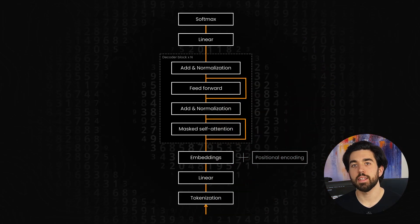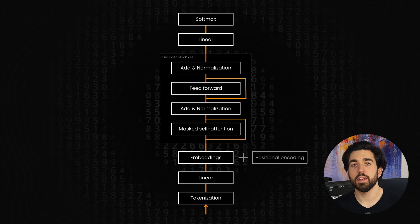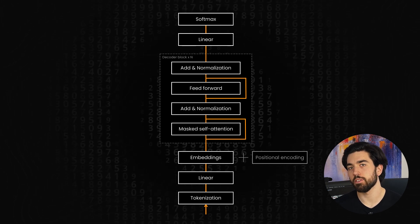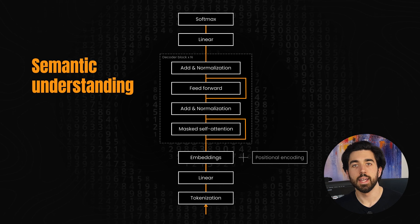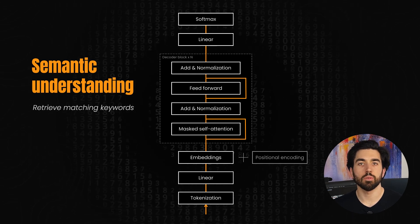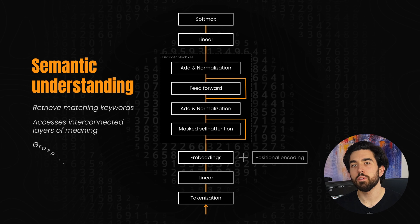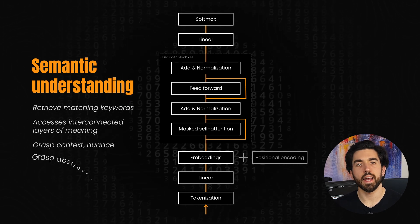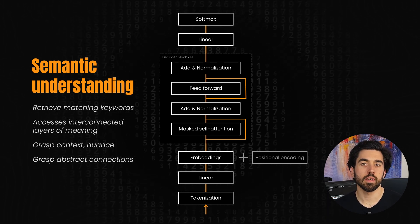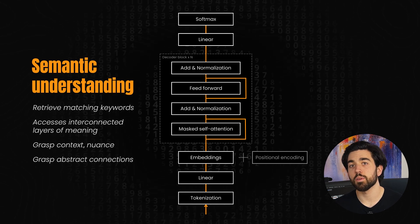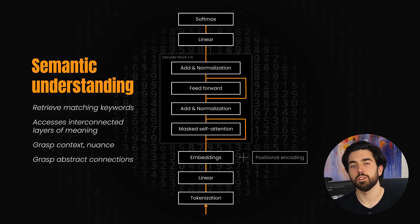This process, developed iteratively during billions of training cycles, creates one of LLMs' standout strengths: a semantic understanding of your questions. It doesn't just retrieve matching keywords, but accesses interconnected layers of meaning, grasping context, nuance, and abstract connections. It comfortably handles complex queries, comparing and synthesizing across diverse concepts, far beyond the keyword-bound reach of traditional search engines.